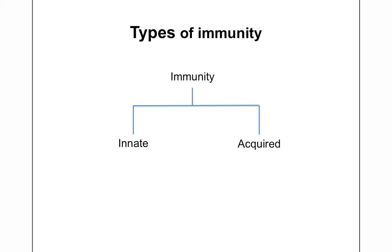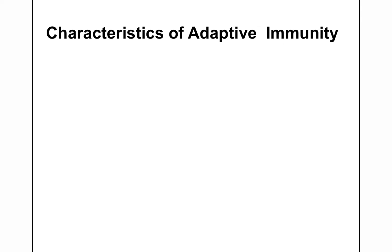Acquired immunity is the immunity that is acquired by the person during their lifetime. There are four different characteristics of adaptive immunity which reflect the presence of a functional immune system. These characteristics include antigenic specificity.